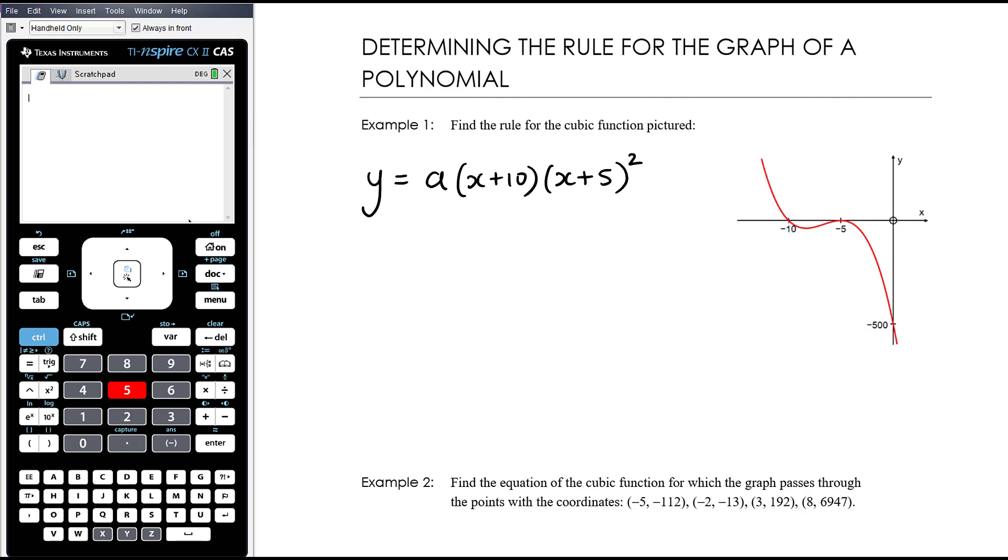Now, we don't know about the dilation because there's infinitely many graphs that cut through the x-axis there and turn there. There's much steeper ones. We want to know the one that's going to have its y-intercept at negative 500. So we're going to use that point, 0 comma negative 500, to find a. So when x equals 0, y equals negative 500. Negative 500 equals a times 10 times 5 squared. So negative 500 is a times 10 times 25. So that's 250a. And so a is negative 500 on 250, which is negative 2.